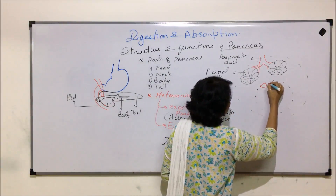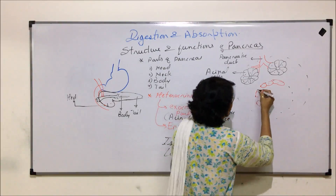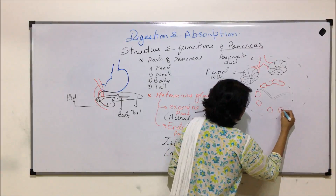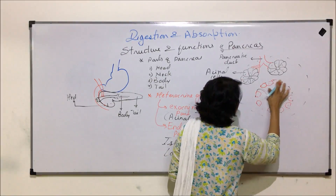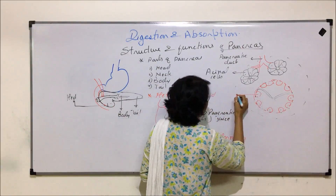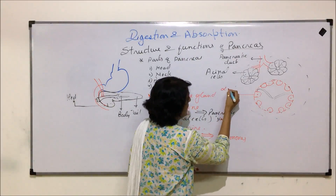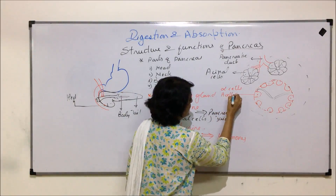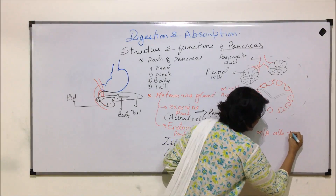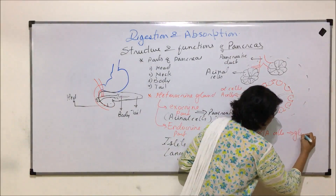Inside the islets of Langerhans, there are peripheral cells and blood vessels. The cells mainly arranged on the peripheral part are alpha cells, also known as A cells. These alpha or A cells produce the hormone glucagon.